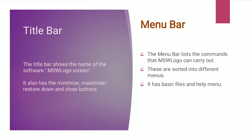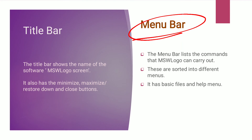Now let's see the detailed description of the components. The title bar shows the name of the software — MSW Logo screen. It also has the minimize, maximize, restore down, and close buttons. The menu bar lists the commands that MSW Logo can carry out, sorted into different menus. It has the File, Basic, and Help menus.